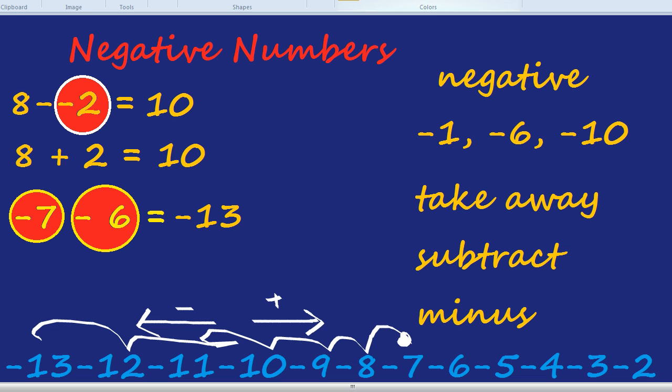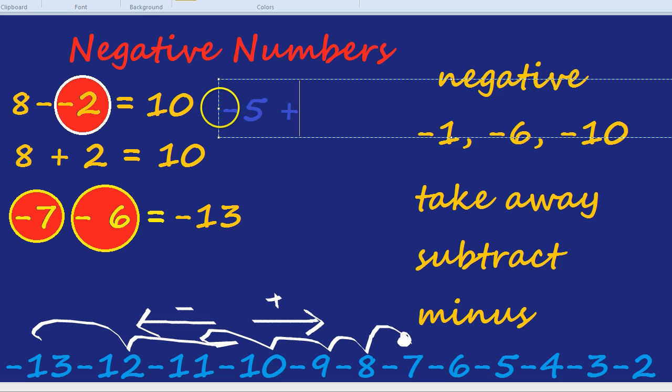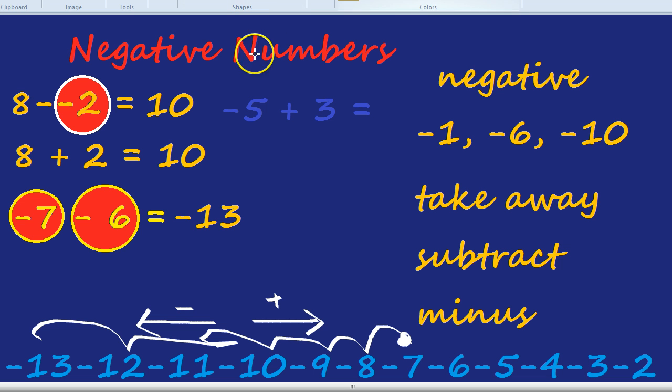Let's try a different sum. How about negative 5 plus 3? There's our debt of 5 pounds, and someone gives us 3 pounds. Have we paid off our debt with that money that they've just given us? No, we're still in debt, but not by as much as we were before. What's the difference between 5 and 3? The difference is 2, and that's how much we're still in debt by. So, we are at negative 2.